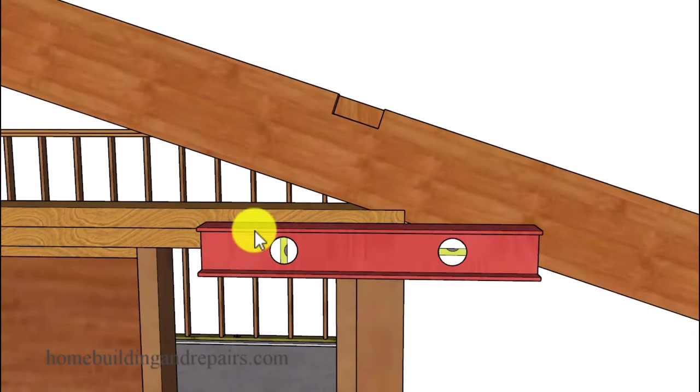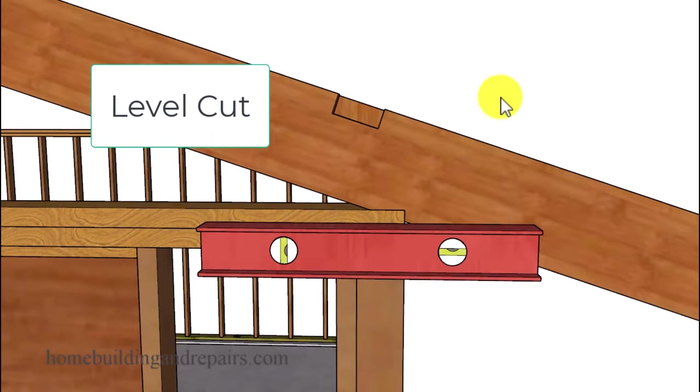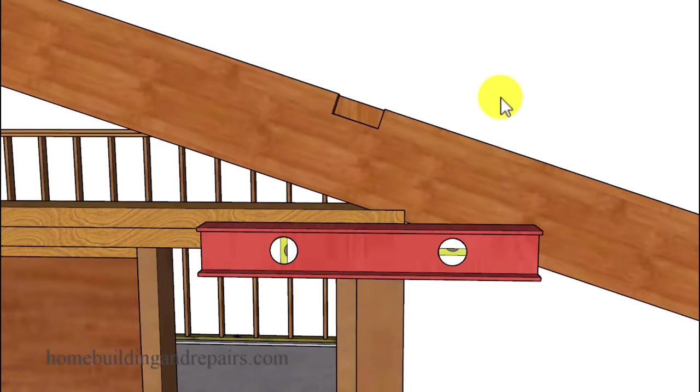Any cut that is vertical like this one right here is going to be a plumb cut. And you guessed it, any cut running horizontal like this one right here is going to be referred to as a level cut.